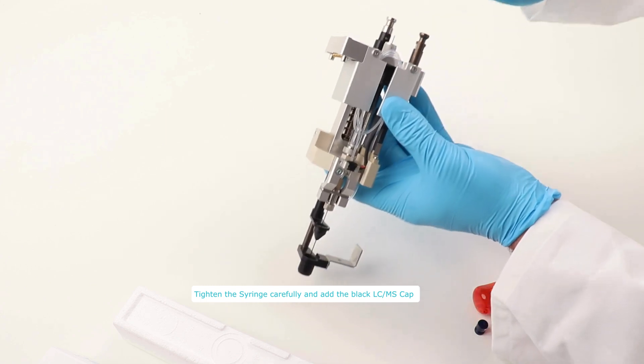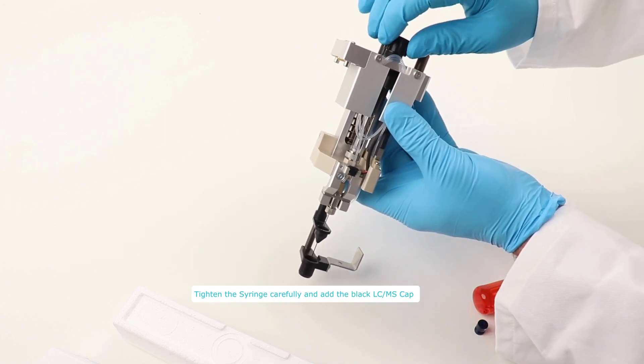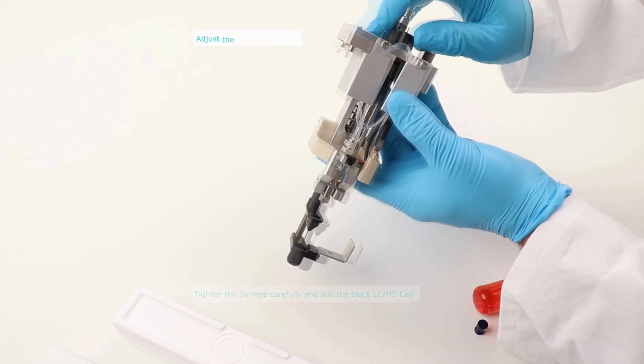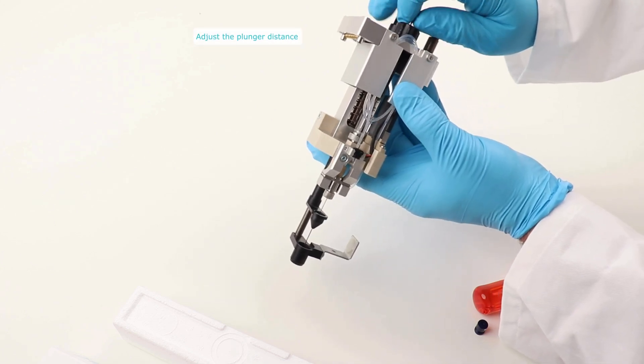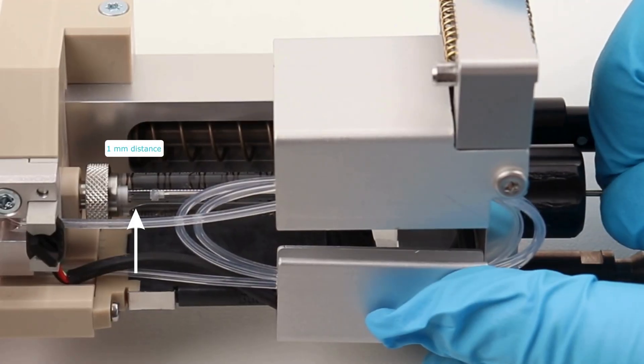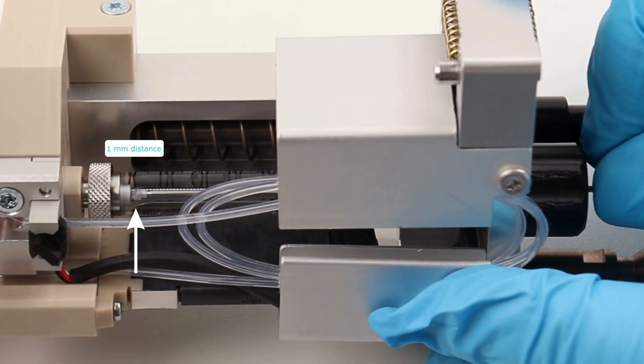Now, place the black cap onto the tool and tighten it as well. Adjust the distance of the plunger inside the new syringe with your fingers. Ideally, the distance of the plunger from the needle is 1 mm, as highlighted here.